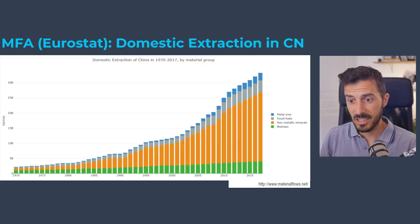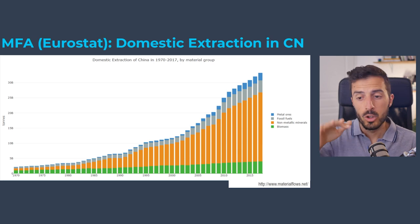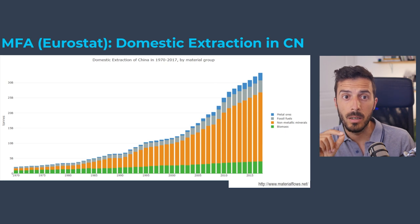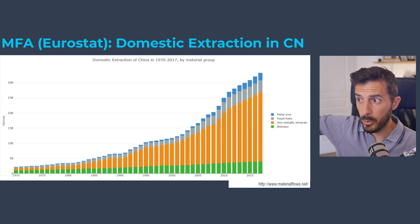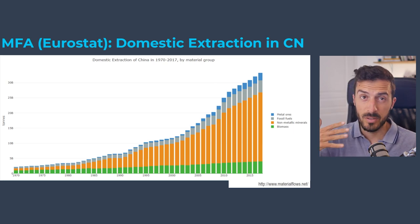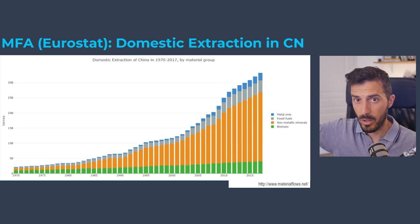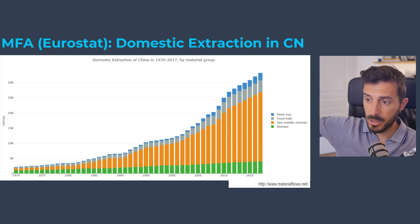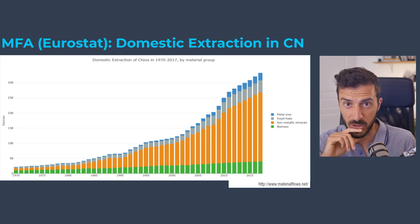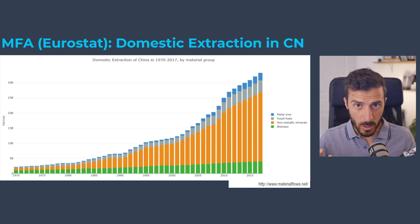Now let's look at a polar opposite example: China. In terms of domestic extraction, over the last 50 years extraction went from around 2 billion tons to today more than 32–35 billion tons, soon approaching 40 billion tons. That's an increase by a factor of 12 or 13 in 50 years, whereas France was rather flat. Biomass has increased a bit, but it's mainly non-metallic minerals that have really skyrocketed, with some metals and fossil fuels as well.